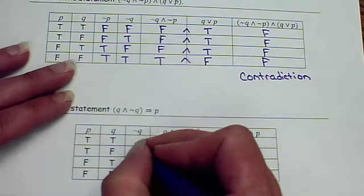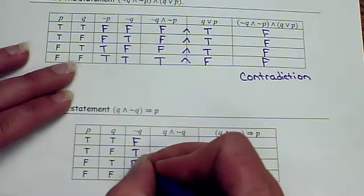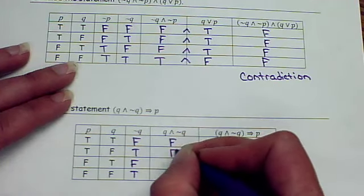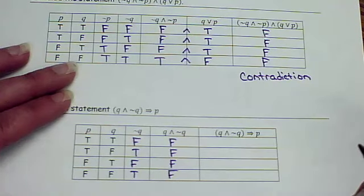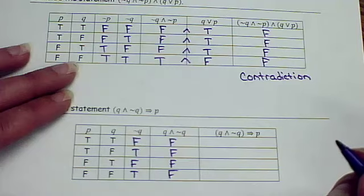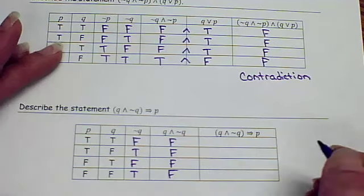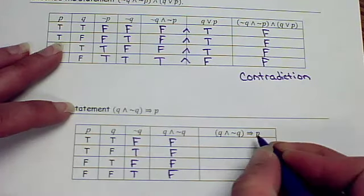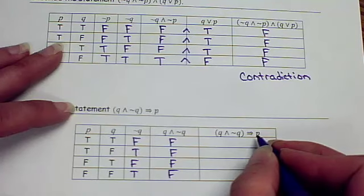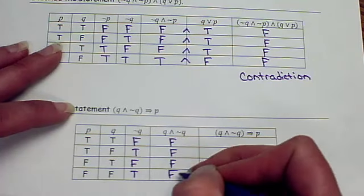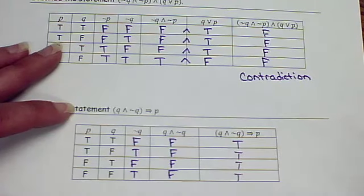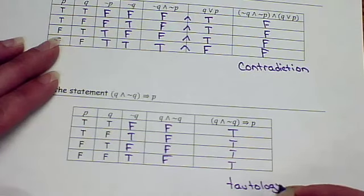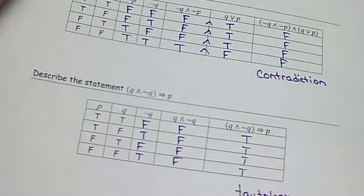We'll go ahead and do the last one. Not Q would be false, true, false, true. Q and not Q. And we already talked about that. That's always going to be false. Right, because you can't have something and something else at the same time. We're going to take that. False, false, false, false. Then P. Now remember about an if-then statement, if the first part is false, it's always going to be true. So this would be called a tautology.